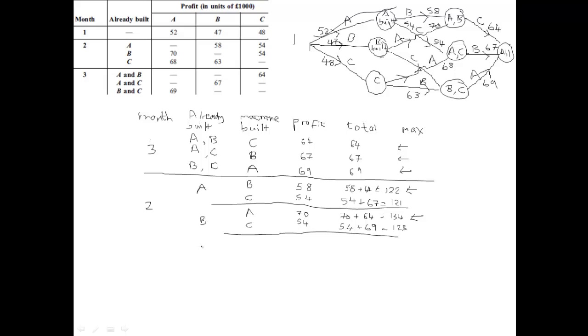That leaves us then with the third state, which is C. If we've built C in the first month, then it's either A or B in the second month. The cost of A is 68 and the cost of B is 63. If A is built, then it's 68. That takes us up to here, so it's plus 67, which gives us 135. And if it's 63, it's 63 plus 69, which gives us 132. Again, we pick the maximum out, and we can see there that 135 is the maximum.